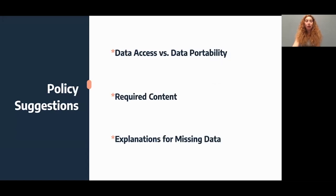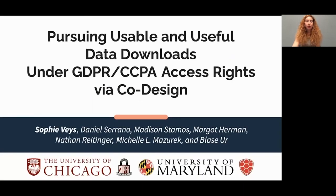We also make policy recommendations. Data downloads are often machine-readable so that they satisfy data portability rights; however, this can make files hard for humans to understand. Data access laws should include readability standards. The law should clarify what data is required to appear in a data download, potentially including inferences and derived data. Further, several participants felt that their files were incomplete — companies should specify when and why data is missing. We hope our initial study spurs future research making data downloads more useful and usable.